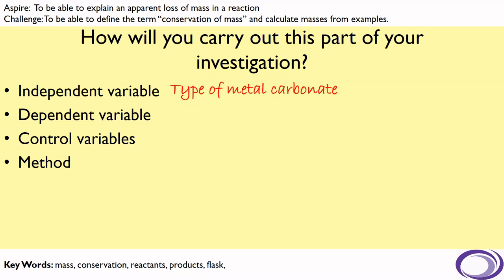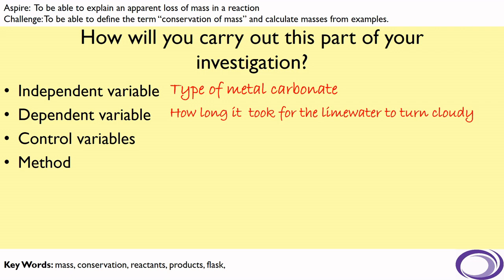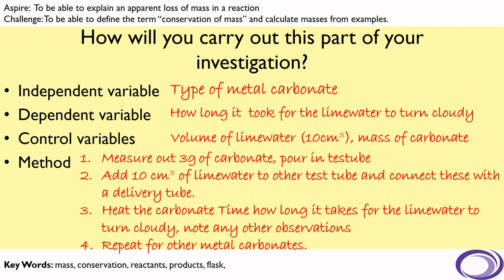Your independent variable is the type of metal in the carbonate. The dependent variable, what you will measure, is how long it takes for the lime water to turn cloudy. The control variables: you will need to use the same volume of lime water and where possible the same mass of metal carbonate. The method would be to measure out a suggested 3 grams of carbonate and pour that into a test tube, add 10 centimetres cubed of lime water to the other test tube and connect them with the delivery tube. Heat the carbonate and time how long it takes for the lime water to turn cloudy, note any other observations — there may be some colour changes as well — and repeat for other metal carbonates.